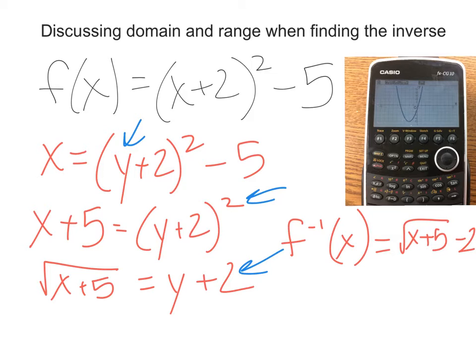Well, what happens though, is that our initial function f is a function. It passes the vertical line test. You can see that in the graph right over here. That you could pass a vertical line through any of these points, and it only hits in one place.